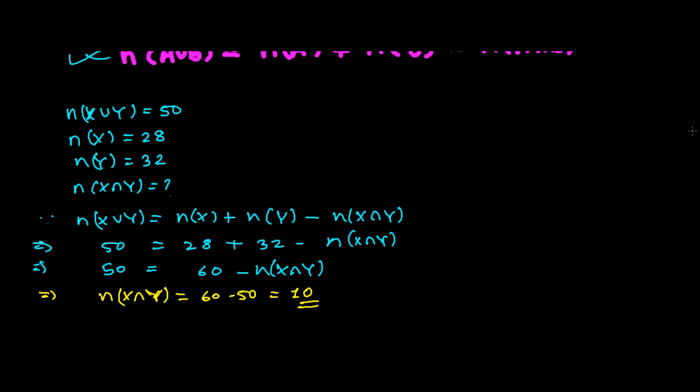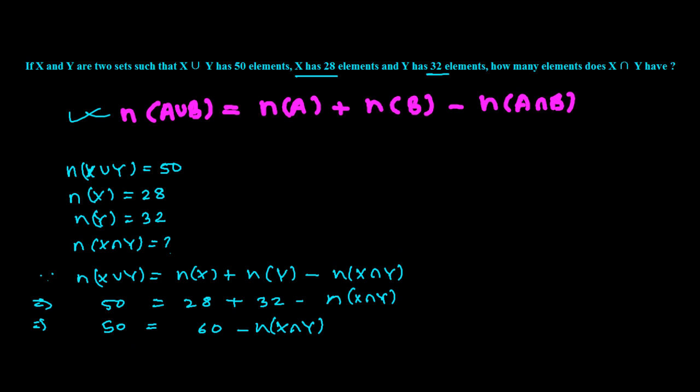So there are 10 elements between set X and Y. The figure, if you want to see, is something like this. Suppose this is our complete union, this is X suppose, and this is Y.